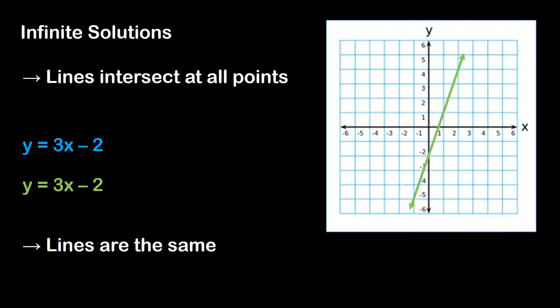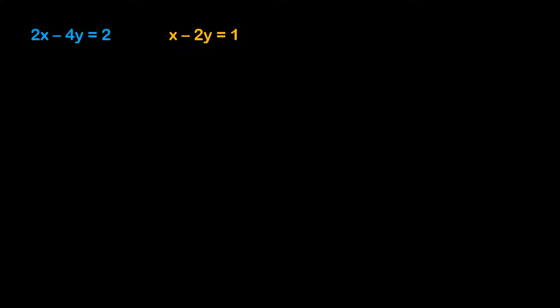Now we'll consider a case where it's not so obvious. In this example, we have two equations in standard form. And we know that when we have two equations in standard form, we're normally going to use elimination. So I'll rewrite the equations again. If I want the x terms to cancel out, what I can do is divide the first equation by 2. That'll give me x minus 2y is equal to 1 — since 2x divided by 2 is x, negative 4y divided by 2 is negative 2y, and 2 divided by 2 is 1.